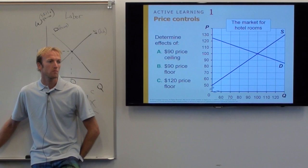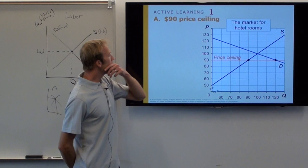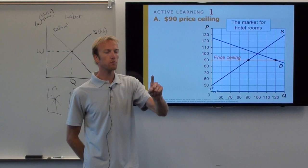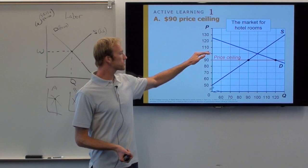Let's do it. $90 price ceiling. First step: draw in that price ceiling right at $90. What's the original equilibrium price and quantity? 100 rooms and $100 — in the world with no government interference, we have $100 a room and 100 rooms sold.